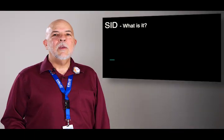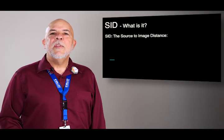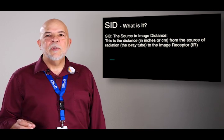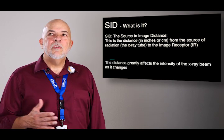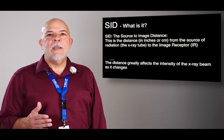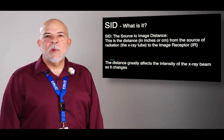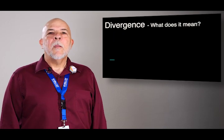Next is SID or source to image distance. This is the distance from the source of the radiation to the image receptor or detector. So the change in distance greatly affects how much intensity there is within the radiation beam and divergence.